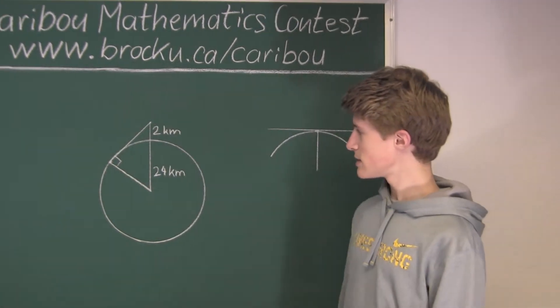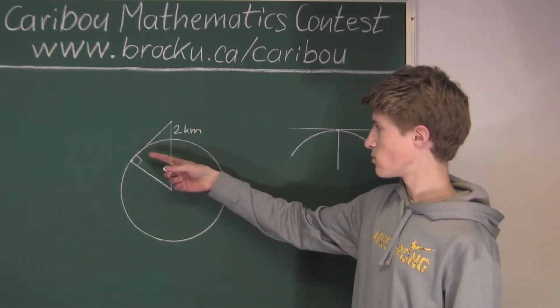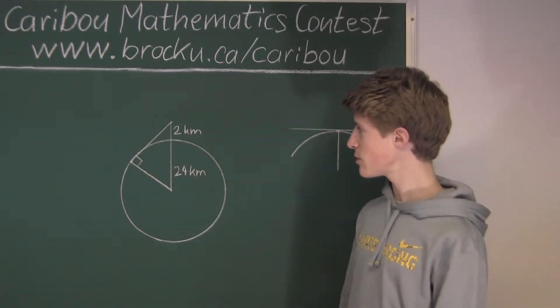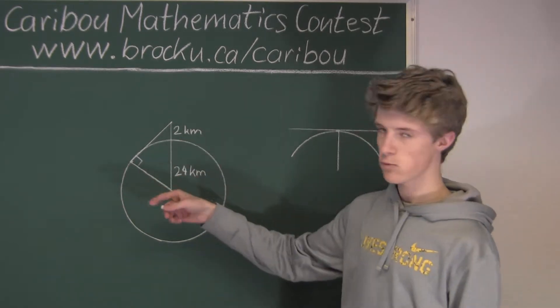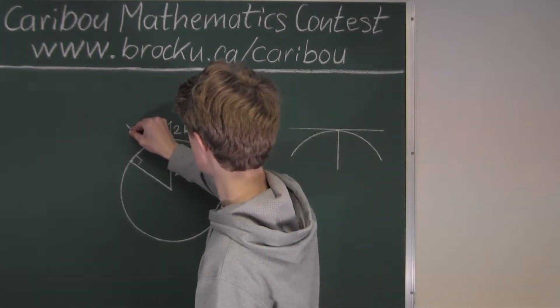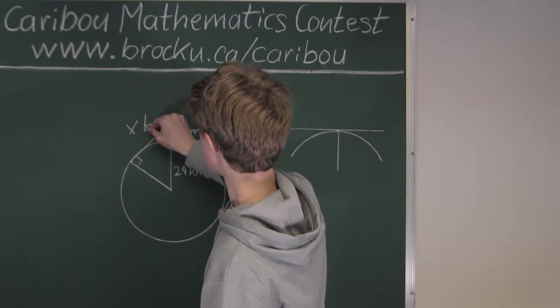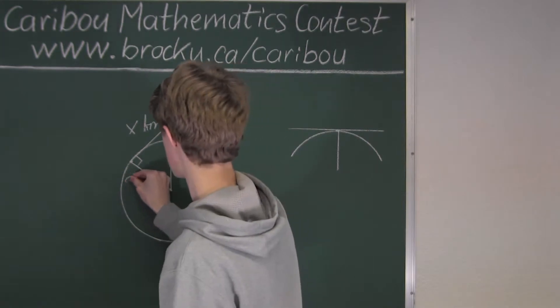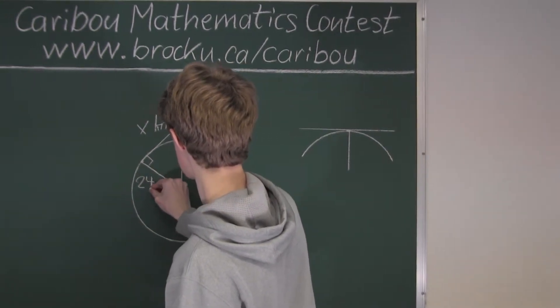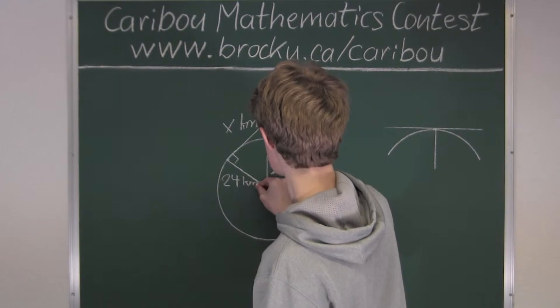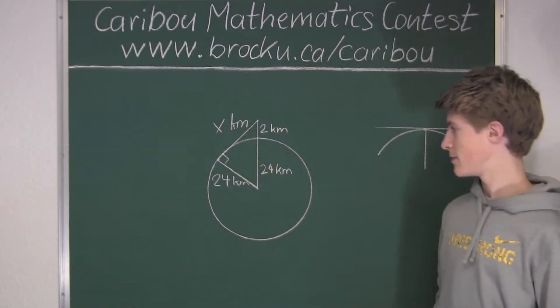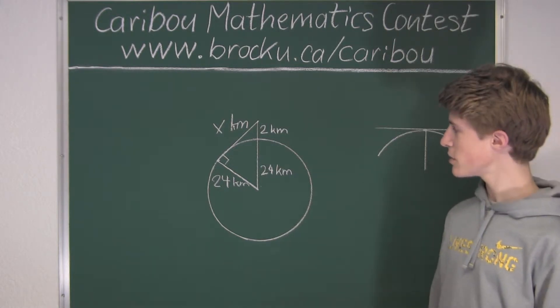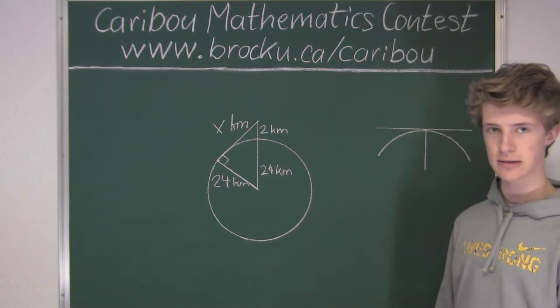Okay, so now since we know that this is a right angle, we know that this is a right angle triangle, and therefore we know that we can use the Pythagorean theorem to find out this side, which we will call x. And where this, of course, we know is the radius, which is 24 kilometers. So we know that the equation for the Pythagorean theorem is a squared plus b squared, which equals c squared.